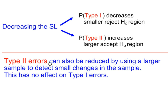Now Type II errors can also be reduced by using a larger sample to detect small changes in the population parameter. This has no effect on Type I errors. For example, if the population mean increases by a small amount, using a small sample size it would be difficult to pick up on that small change. So the way forward is to use a larger sample size which makes it easier to detect a small change in the population. This will lead to a decreased Type II error.